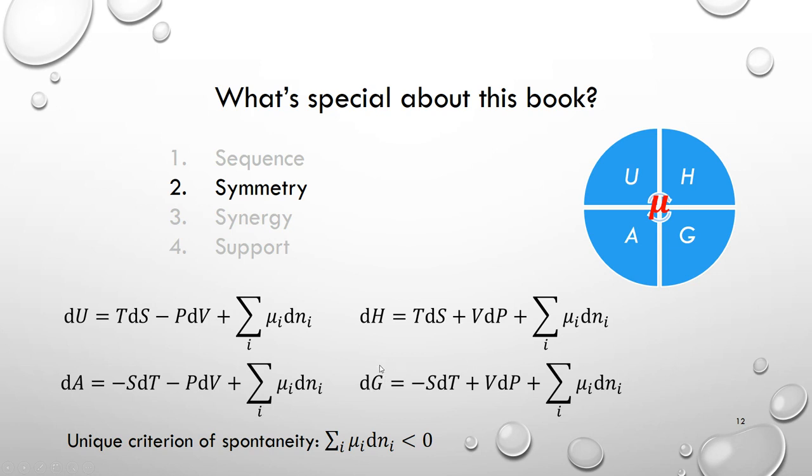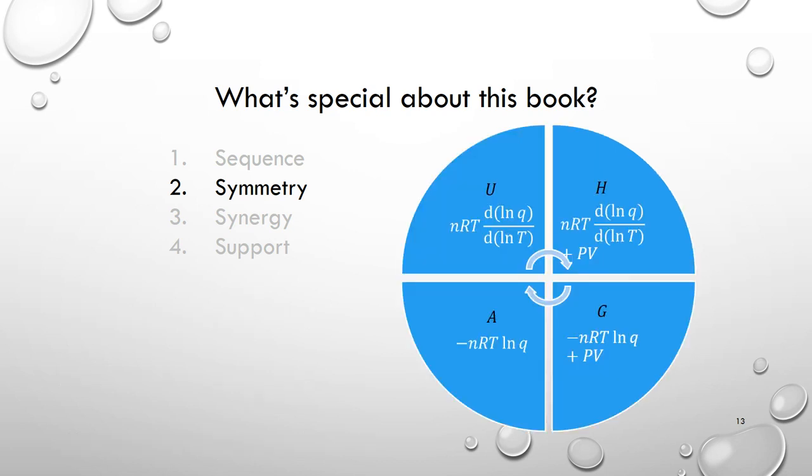And we can look at these equations to determine the criterion for spontaneity. And surprisingly, it's the same. It's just this: the sum of mu_i dn_i is always less than zero. And so, in many PCHEM textbooks, it states that at constant temperature and pressure condition, so dT is zero, dP is zero, the criteria is dG must be negative. Well, if you look at this equation, if temperature and pressure are constant, dG is negative, then that simply means the sum of mu_i dn_i is negative. Similarly, if the condition is constant temperature and volume, we say the criteria is either dA should be negative, or this sum of mu_i dn_i should be negative.